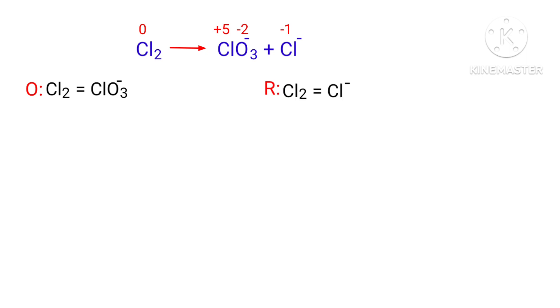In the ion-electron method, one reaction is divided into two half-reactions, and then they are balanced and added together.